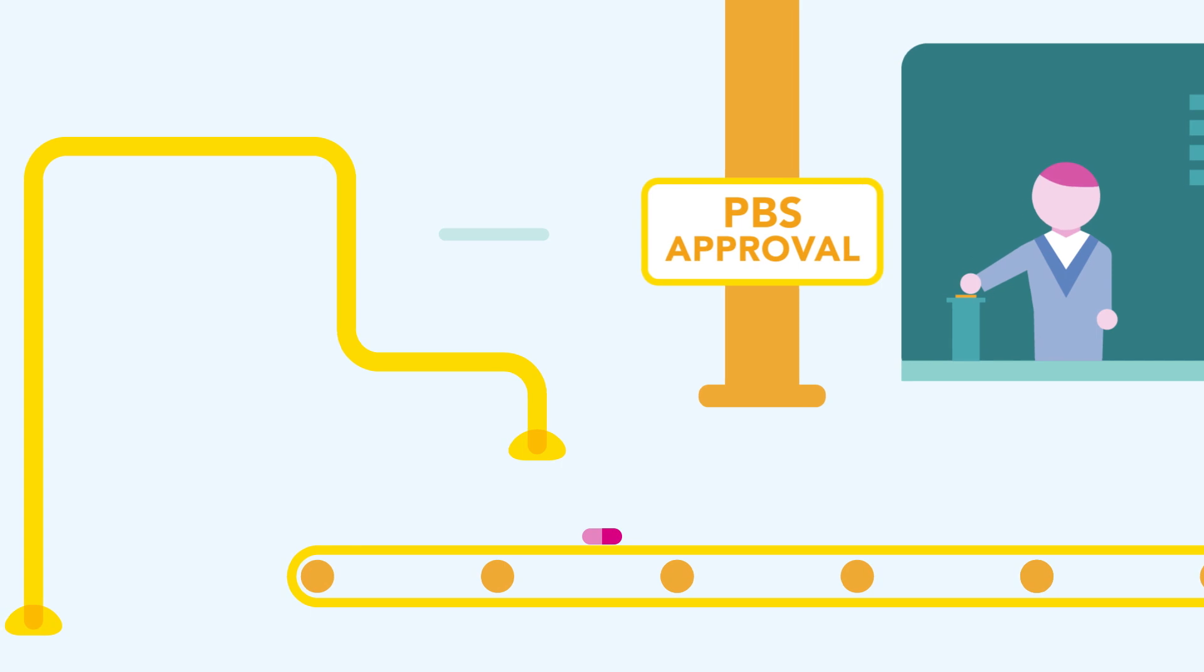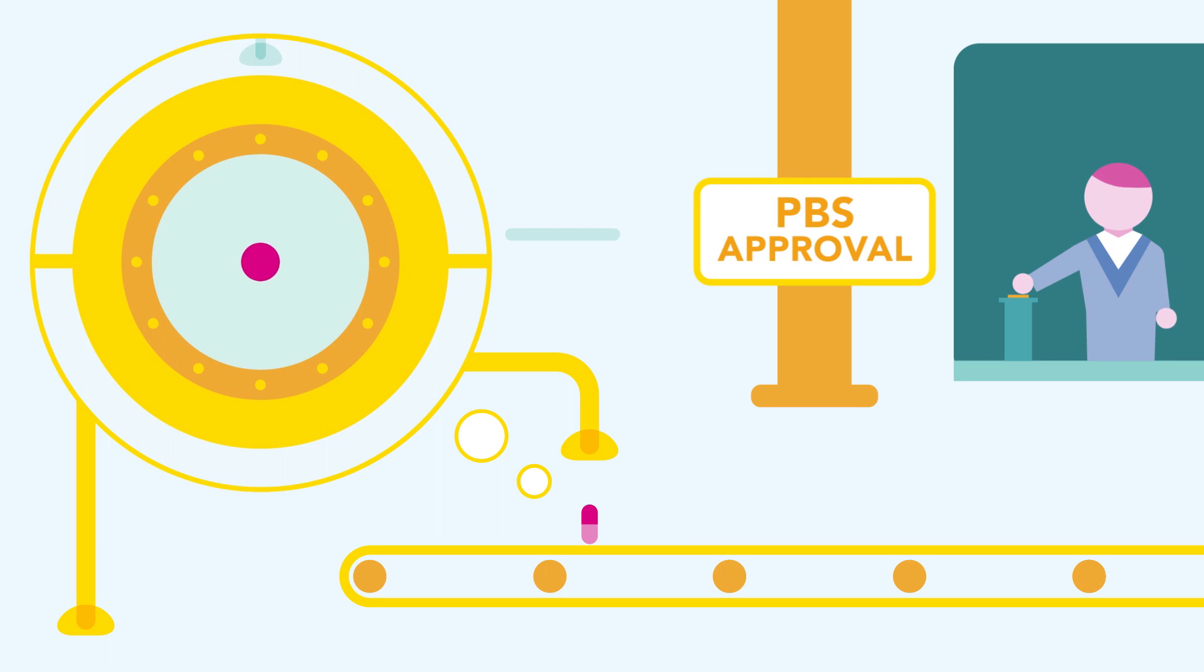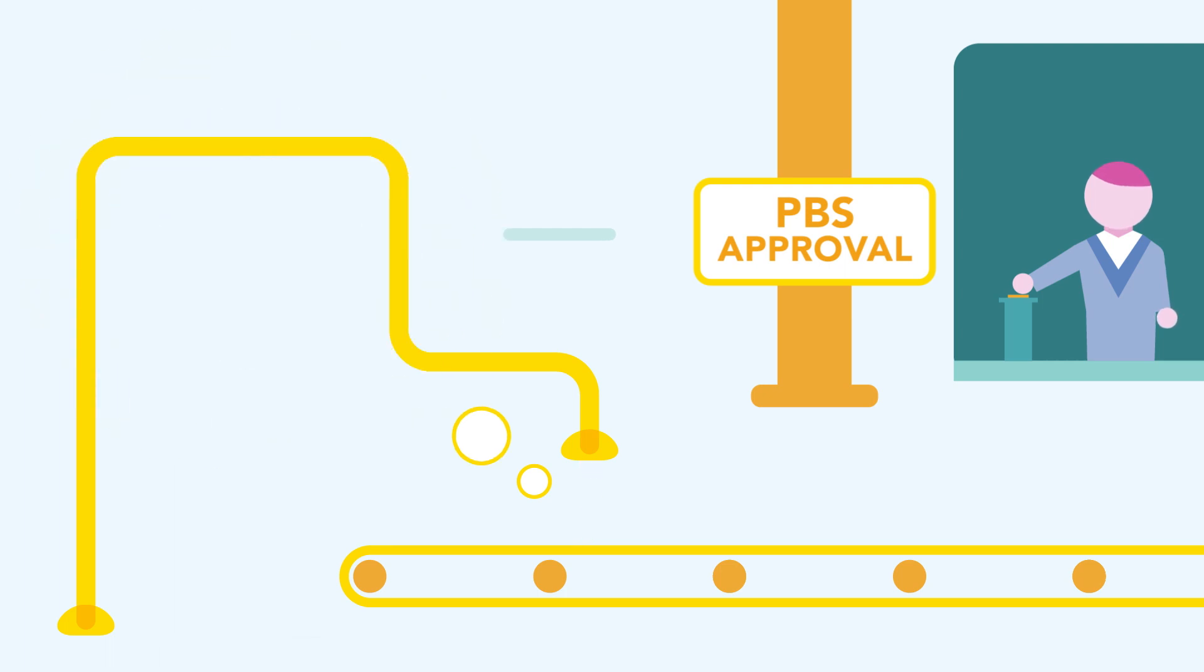Once listed on the PBS, a medicine is affordable for those who need it. If there is evidence to suggest that a medicine may be effective in treating another condition, this can be explored through further clinical trials and the process starts again.